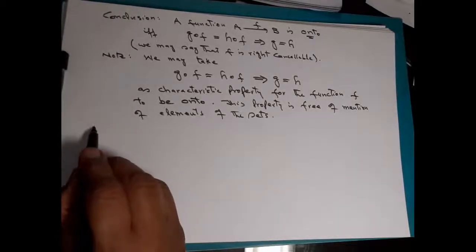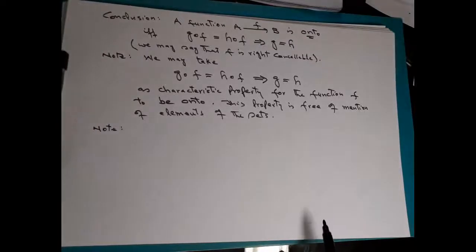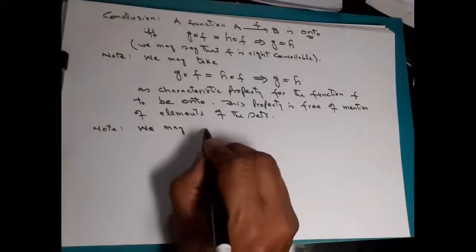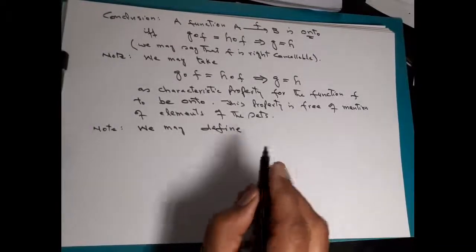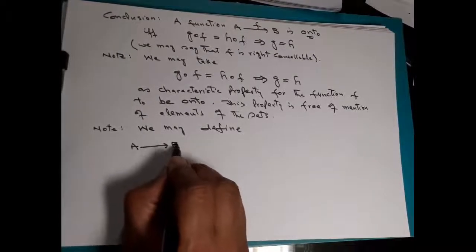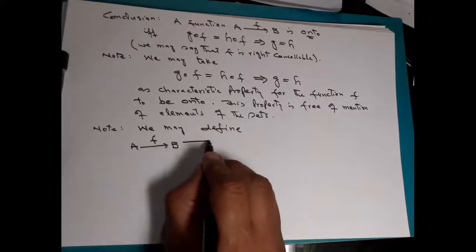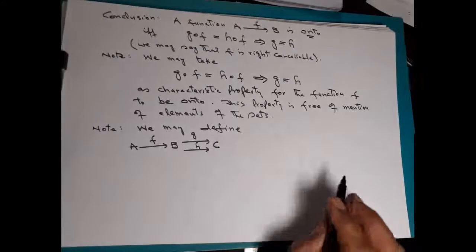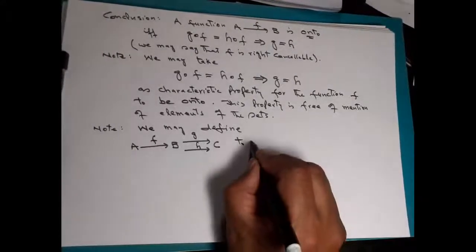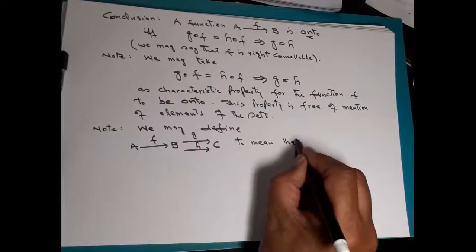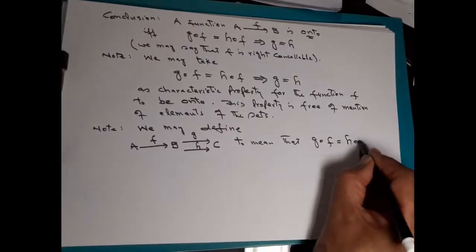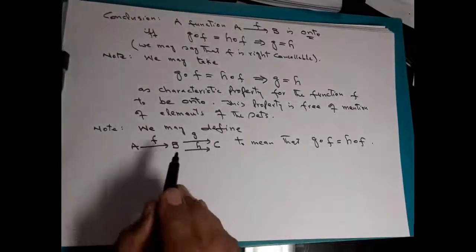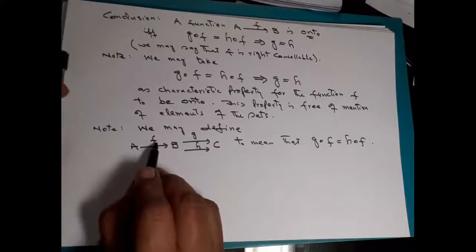It becomes helpful if we write in terms of arrows. We may define this particular diagram: this is function f, and these are two parallel functions g and h with domain B and co-domain C. We may define this diagram to mean that g∘f is equal to h∘f. So if this diagram is there, we read it as g∘f is equal to h∘f. This is the agreement we are making.